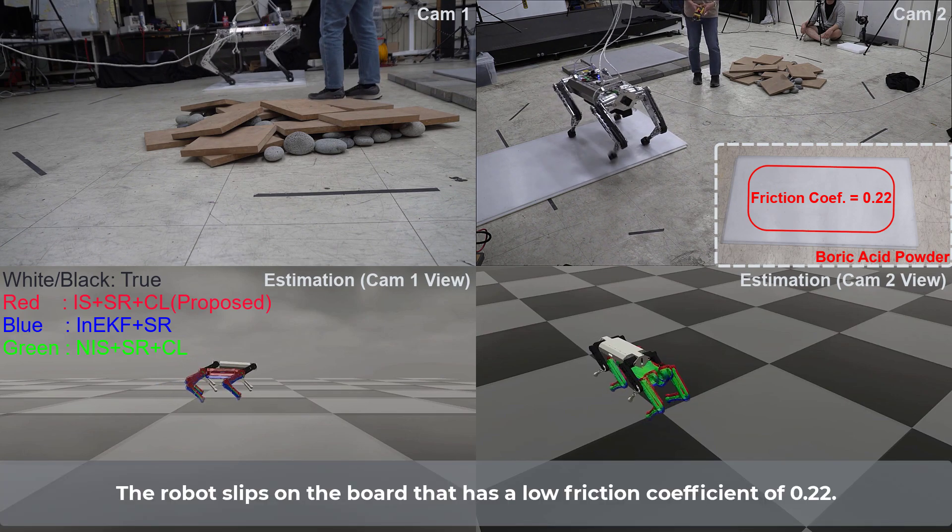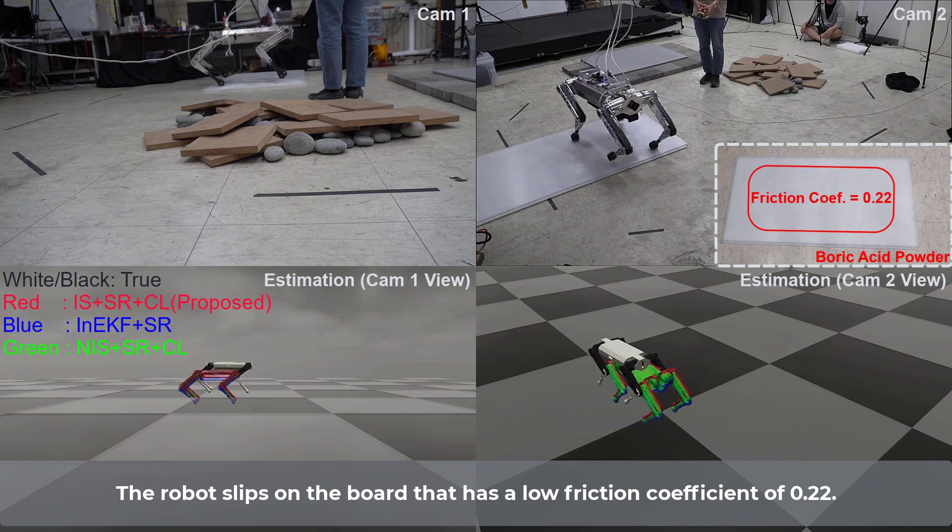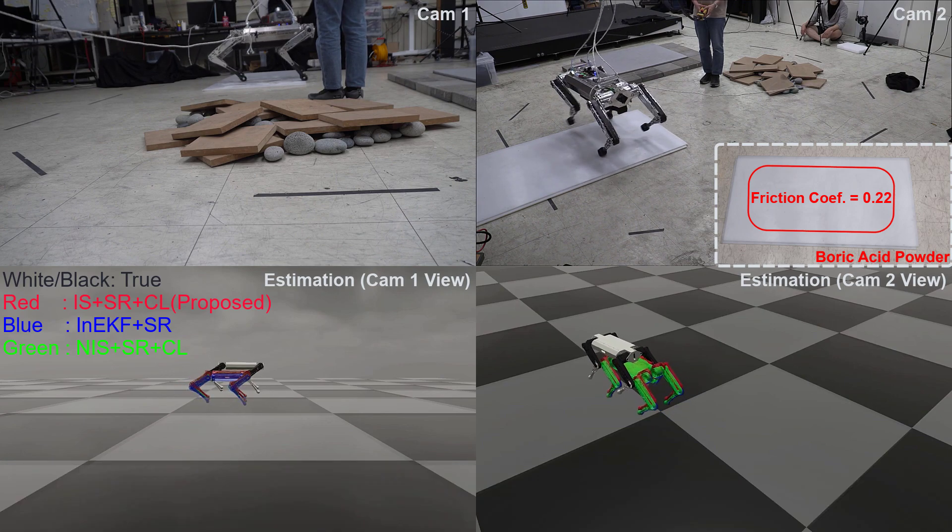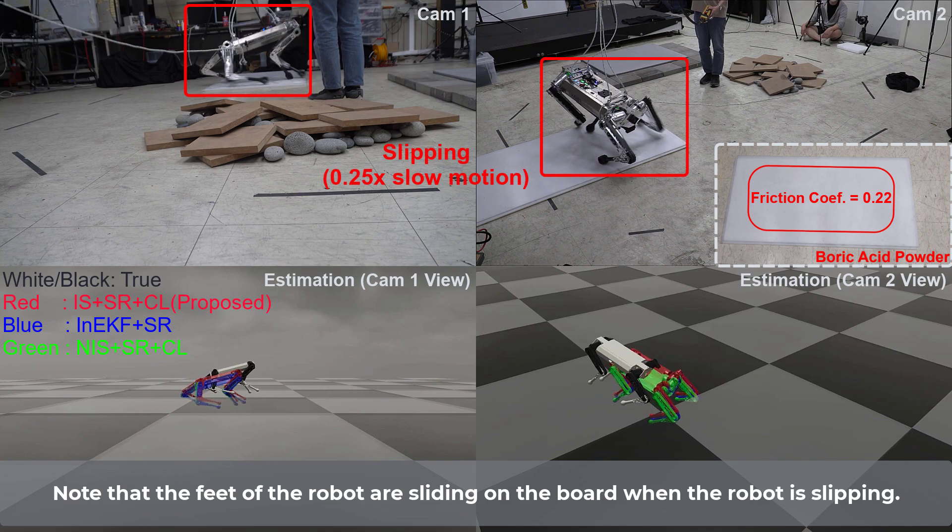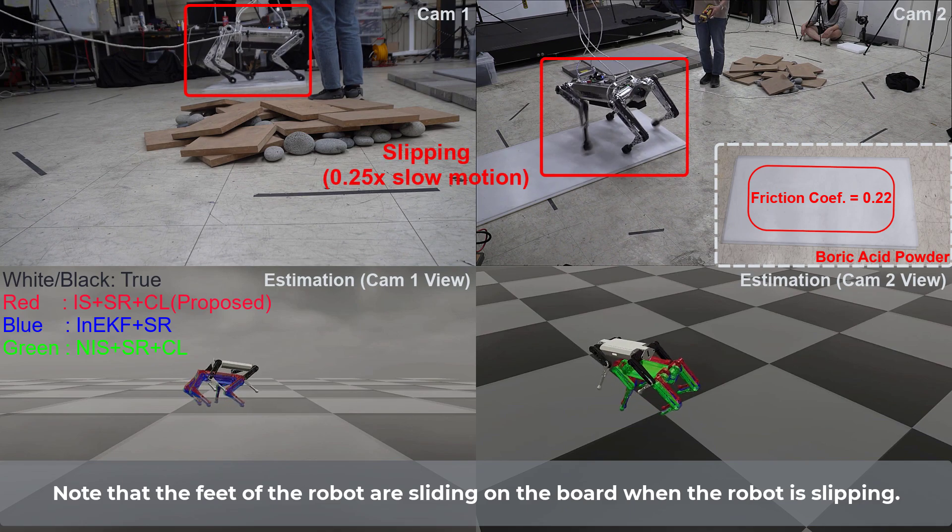The robot slips on the board that has a low friction coefficient of 0.22. Note that the feet of the robot are sliding on the board when the robot is slipping.